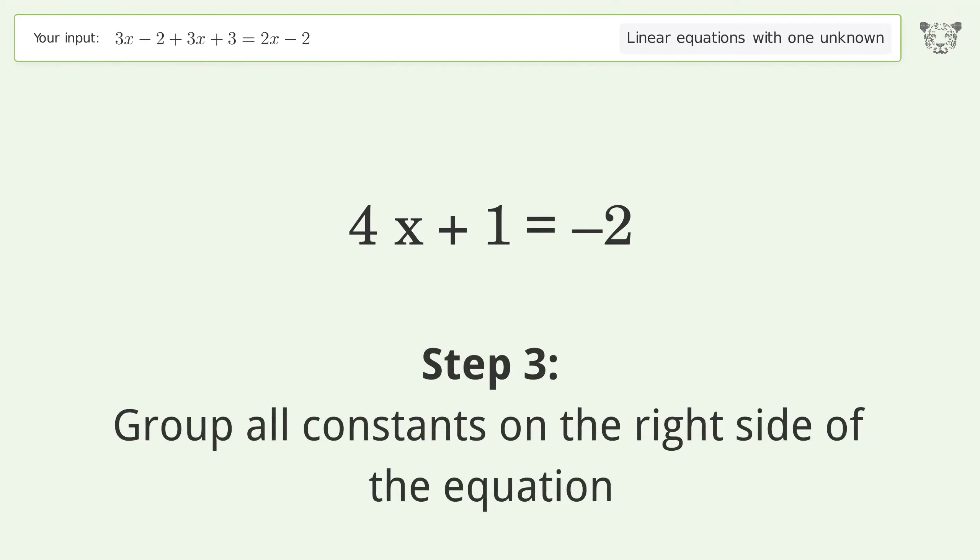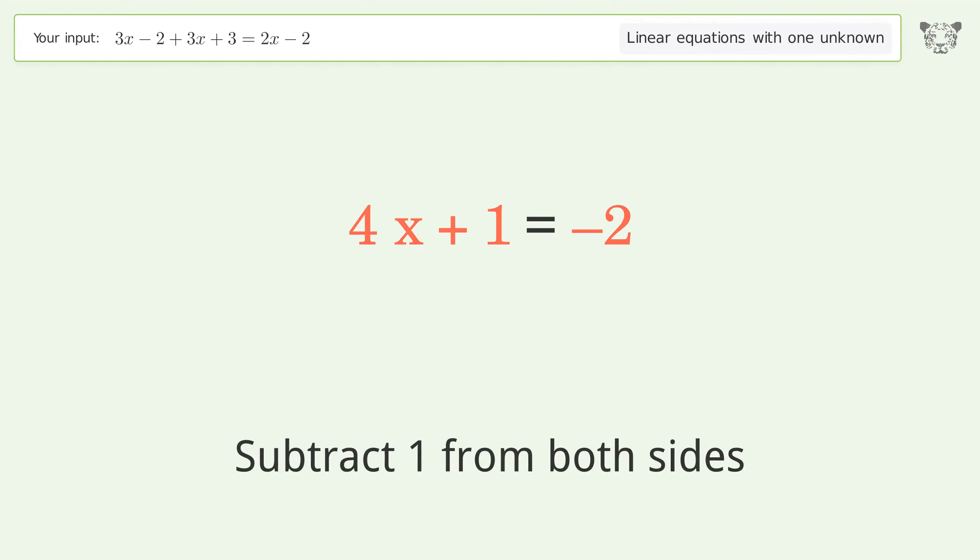Group all constants on the right side of the equation. Subtract 1 from both sides. Simplify the arithmetic.